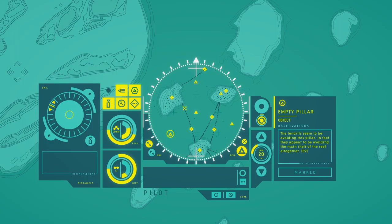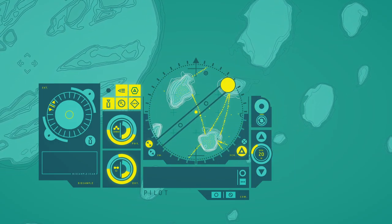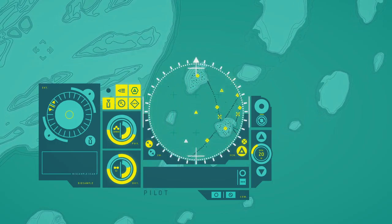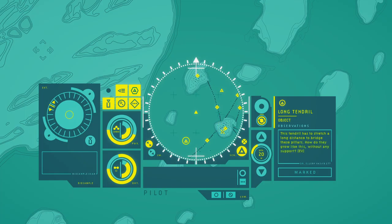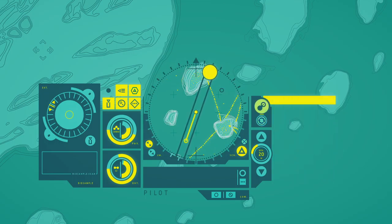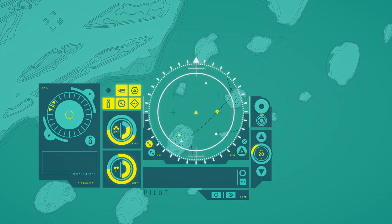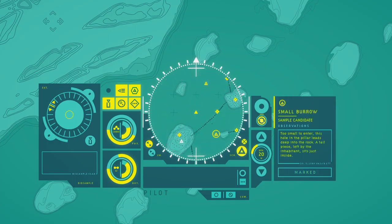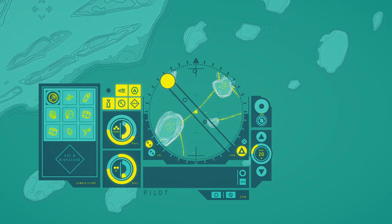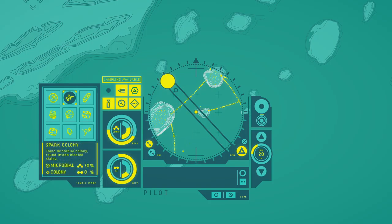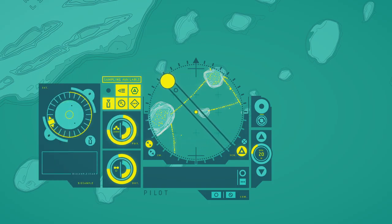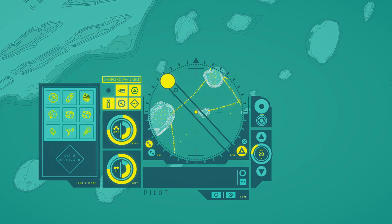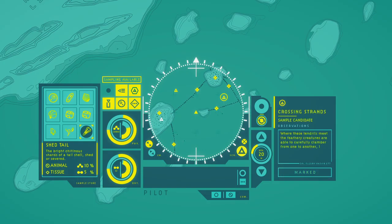It's easy to get confused once you are among these webbed tendrils, navigating between the sunken islands of life. The tendrils seem to be avoiding this pillar. In fact, they appear to be avoiding the main shelf of the rock altogether. This tendril has to stretch a long distance to bridge these pillars. How do they grow like this without any support? Too small to enter. This hole in pillar leads deep into the rock. A pile of shed feathers sit just inside. Very cool. Where are these tendrils made that feathered creatures are able to continue to climb over them and leave behind feathers as they do?